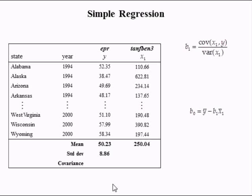The standard deviation of the employment population ratio is 8.86 percentage points. The 10th benefit for a family of 3 has a standard deviation equal to $99.03. The covariance in these two variables is negative 24.7 percent-dollars.